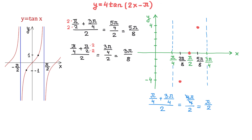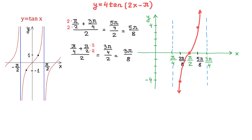For example, if we replace x with 5 pi over 8 and type all this in the calculator, we will get the value of 4. Now let's connect the points to get the graph. From the x-intercept as we get closer to 3 pi over 4, the function will approach positive infinity, and as we get closer to pi over 4, the function will approach negative infinity. Here we have the graph of y equals 4 tangent of 2x minus pi, and the period of this function is pi over 2, since the distance from pi over 4 to 3 pi over 4 is pi over 2. From here we can repeat this graph to the left and to the right as many times as needed.